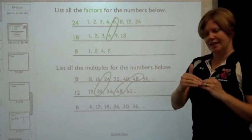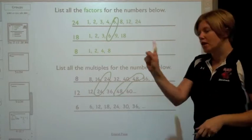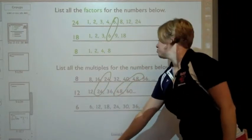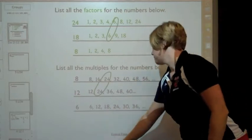But L stands for least, the smallest. So where's the smallest common factor? That's right here, 24. So I'm going to get rid of this one, the 48. It's not the least.